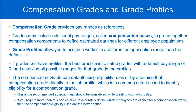Assigning the compensation grade directly to the job profile is the recommended approach and should be considered when creating your job profiles. But if it is not straightforward — if you need more than one criteria to identify which employees get which compensation grade — then you can consider using eligibility rules. The recommended approach works even in very large organizations with as many as 300,000 employees, so smaller organizations can definitely manage it too.